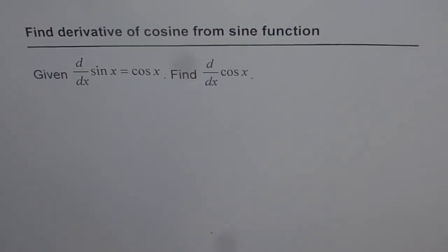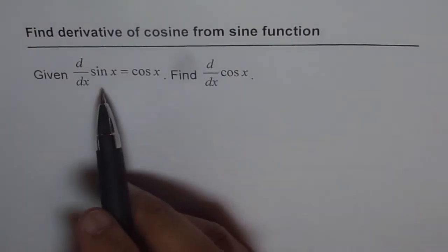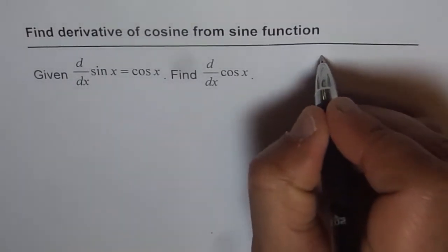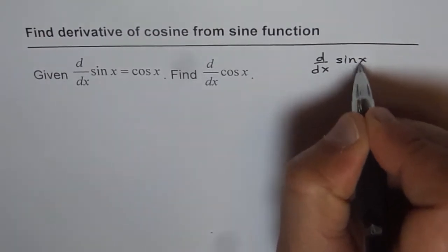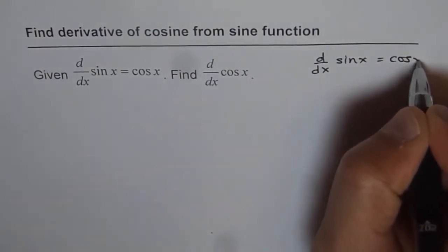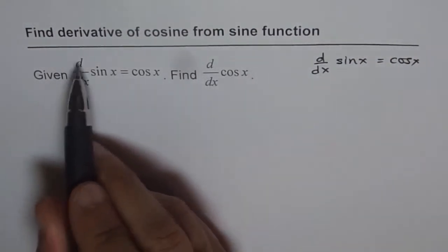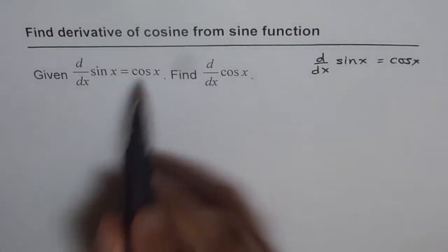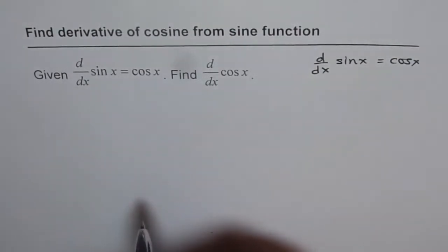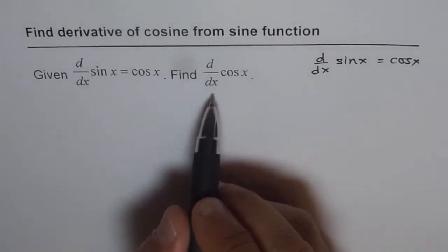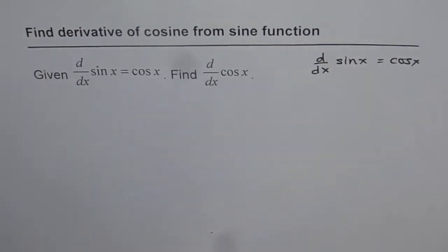Find derivative of cosine from sine function. Now in the previous video, from the first principle we found derivative of sine x and that was, let me write it down here, d/dx of sine x equals cos x. It's written here as such, given d/dx of sine x is cos of x, find d/dx of cos x. So let's now figure out what is derivative of cosine x.